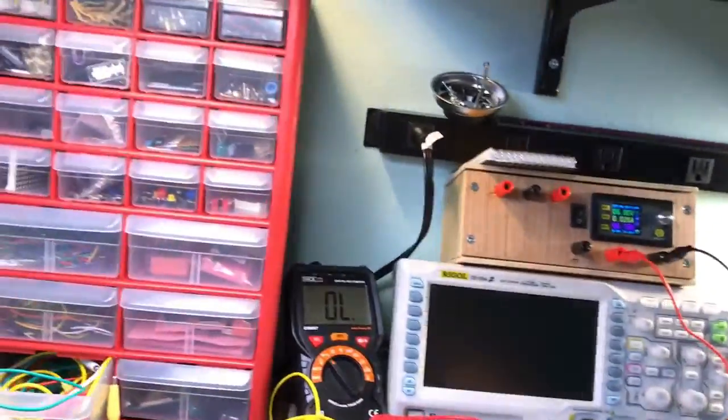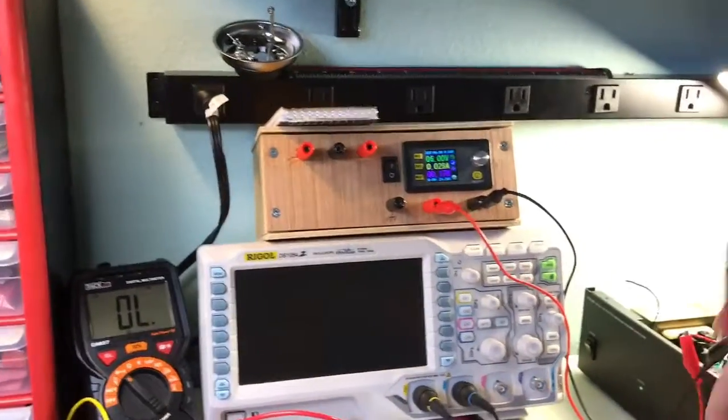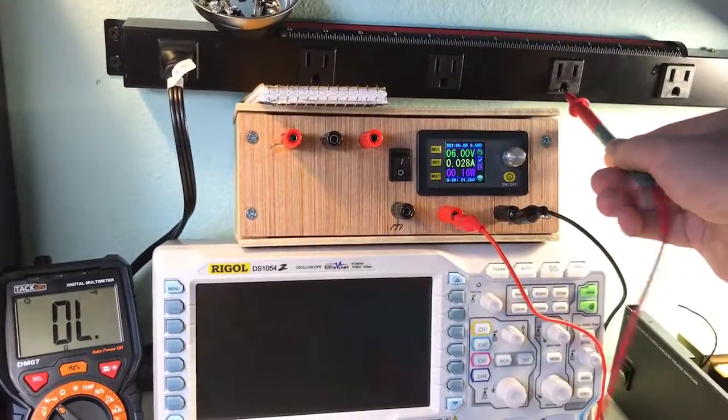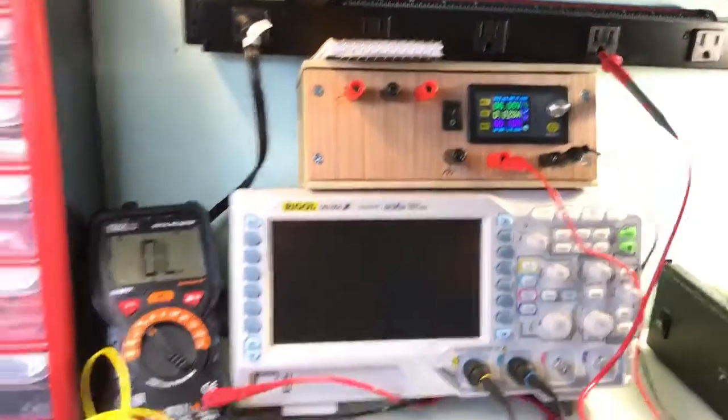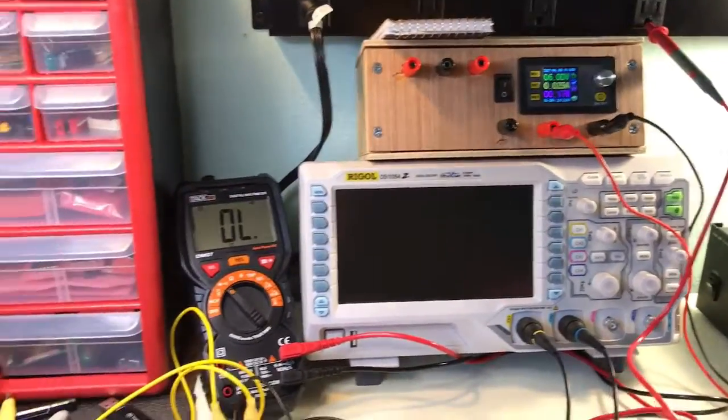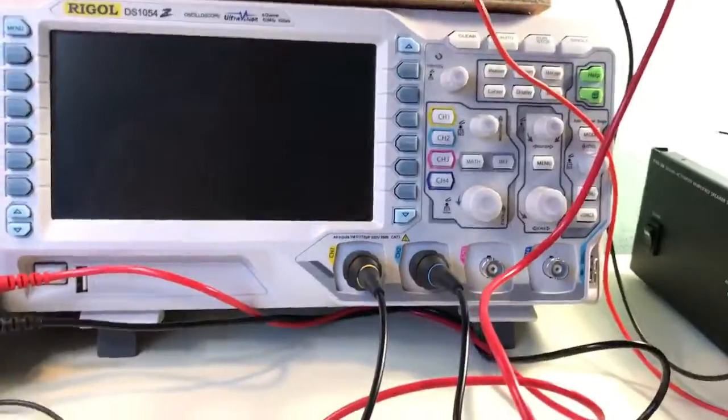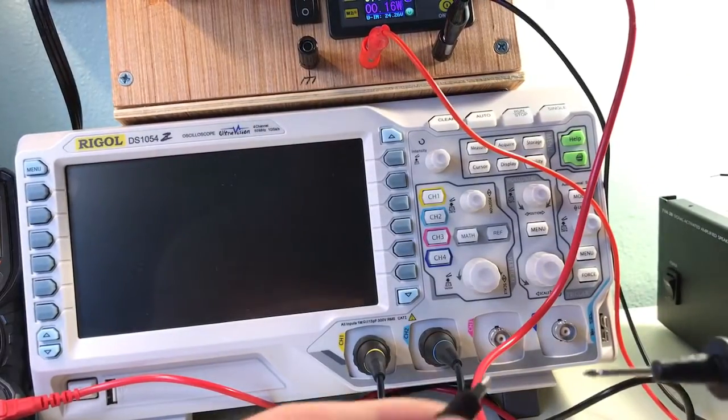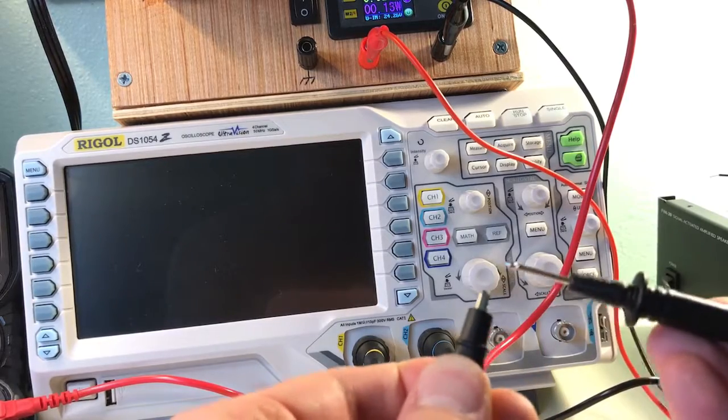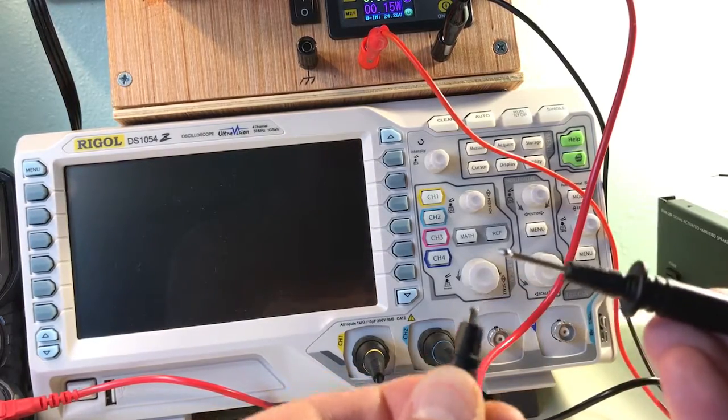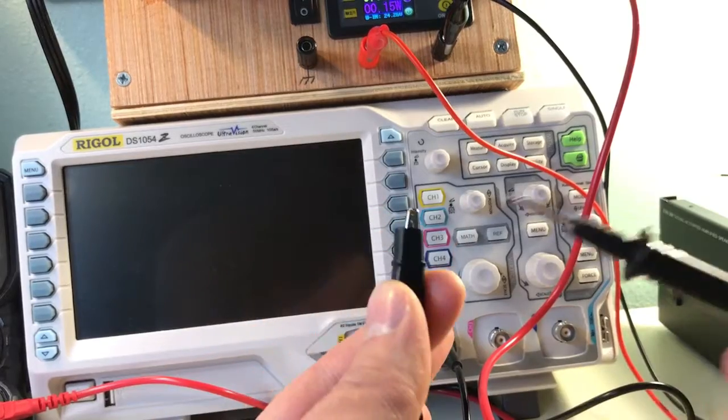So if I take my probe here and I stick this into ground—you probably shouldn't try this at home unless you know what you're doing—but I stick that lead into ground, probably doesn't have a great connection, but I'll fix that. And I connect this. So that illustrates that this is connected directly to the outlet's ground port.